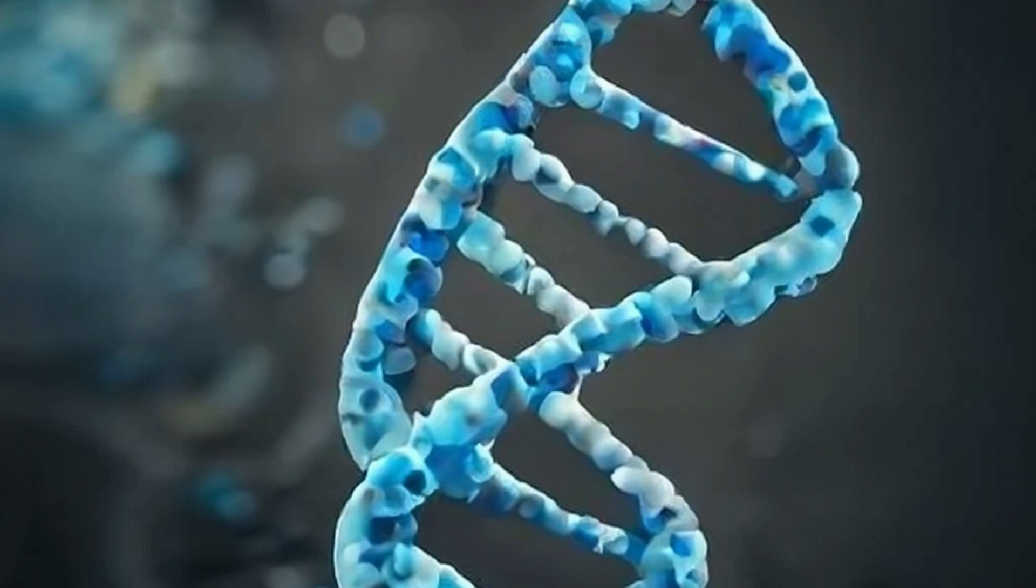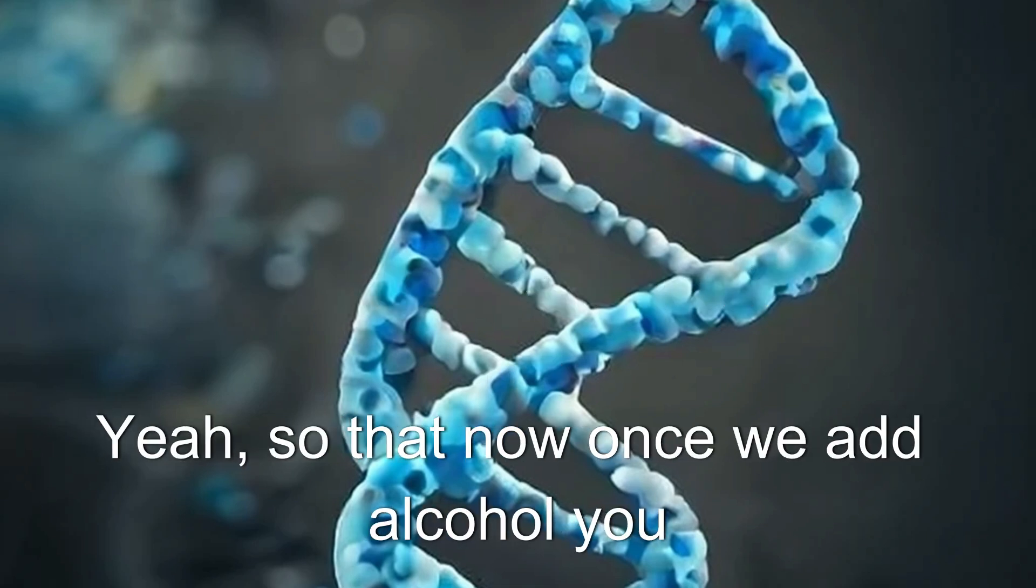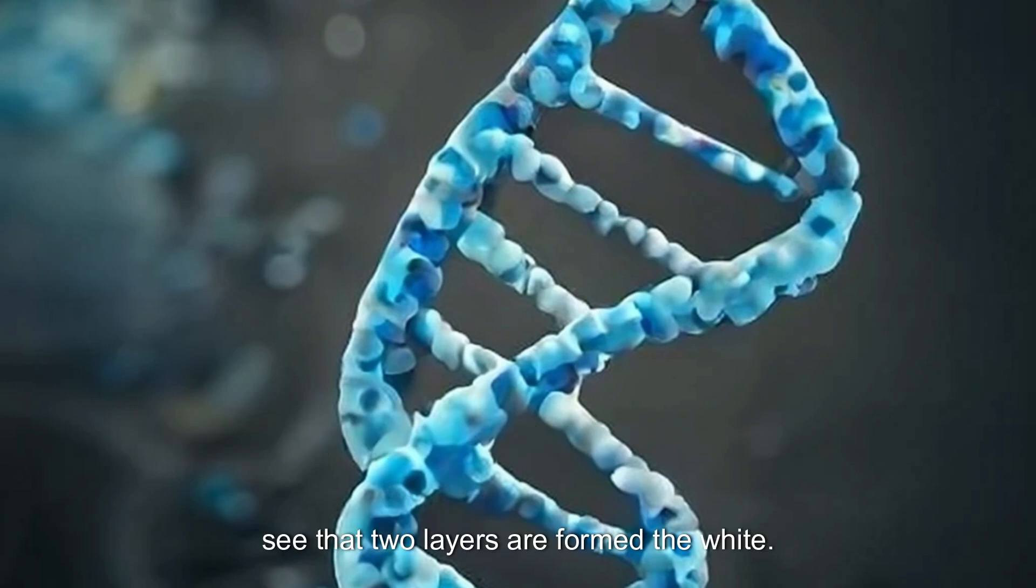Then we can talk about the alcohol. What is the alcohol used for? Basically alcohol is used to precipitate the DNA from the solution. So that now once we add alcohol, you will see that two layers are formed. The white mist or white cotton-like mass will be formed on top of the beaker. If you're using a beaker, if you're using a glass, whatever you are using, you will be able to see those two layers but after adding alcohol. So alcohol is very important in precipitating the DNA out of the solution or the mixture you have prepared.